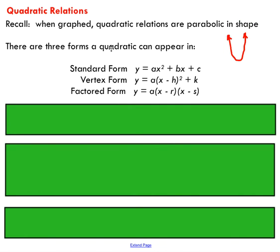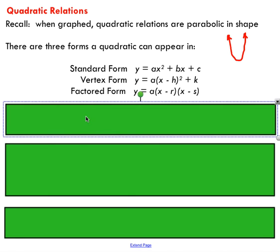There are three forms that a quadratic can appear in. Standard form y = ax² + bx + c, you've definitely seen something like this before. Vertex form is useful—it allows us to pick out the vertex of a parabola. We also have factored form, which is useful because it helps us pick out the x-intercepts of a parabola.